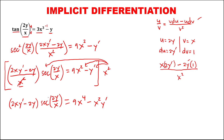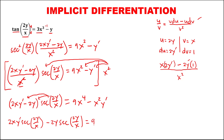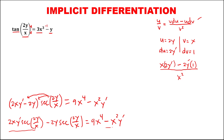Then distribute the secant squared of 2y over x. So this term: 2xy prime times secant squared of 2y over x. Then to this term: negative 2y times secant squared of 2y over x. Then equals 9x to the power 4, minus x squared y prime.